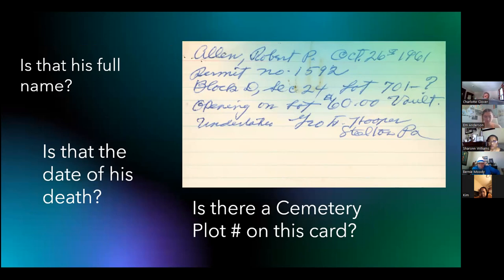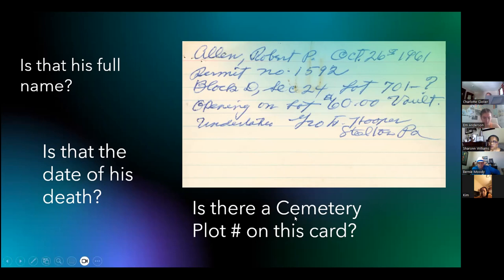Is that his full name? We don't know until we see the other records, which could have a middle name instead of just an initial. Is that the correct date of death? Maybe, but it could also be the date of burial or some other event, so we have to read the other records before we know for sure. Is there a cemetery plot number on this card? If you chose the information on the third line down, which says block D, section 24, lot 701, then you're correct.